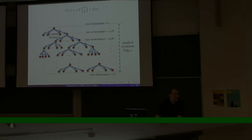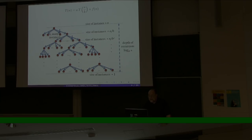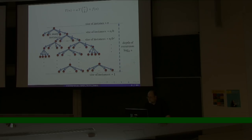A student asks for an example where a is not equal to b. For example, in the failed naive approach to integer multiplication, a and b were both 2, but Karatsuba was smart enough to reduce multiplication of two n-bit numbers to only three multiplications of numbers of size n/2, giving a=3 and b=2.